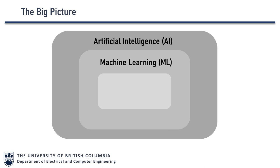Under machine learning, we have another subset called deep learning. Deep learning is somewhat smarter and more intense because it mimics the functionality of the human brain. In our brain, we have billions of neurons — a single neuron is useless, but the interactions between billions of neurons are the key. Deep learning mimics this multi-layered structure of neurons, operates on input datasets, and generates output datasets.